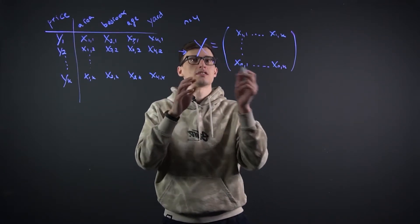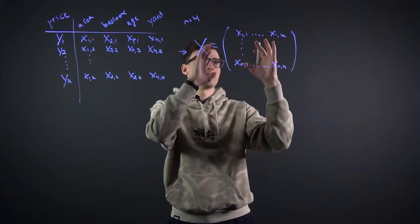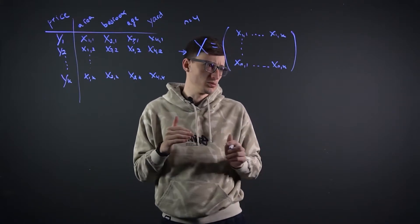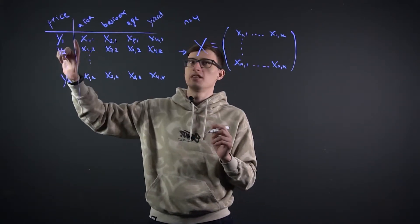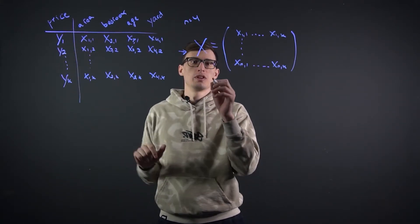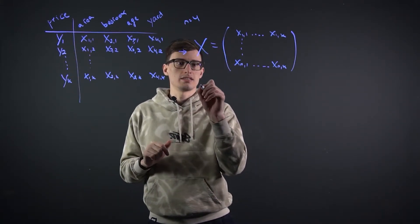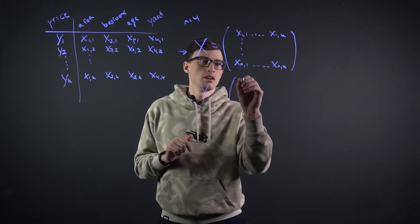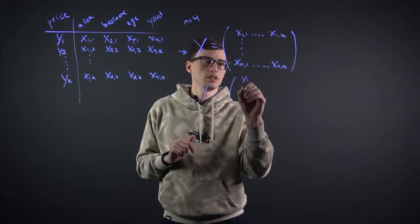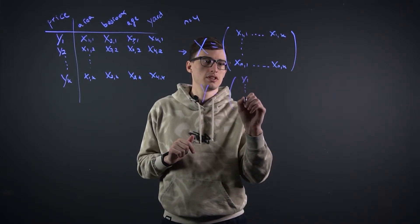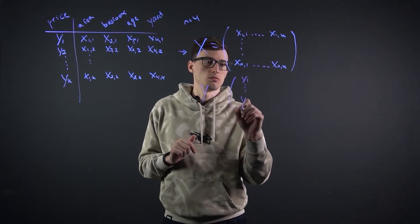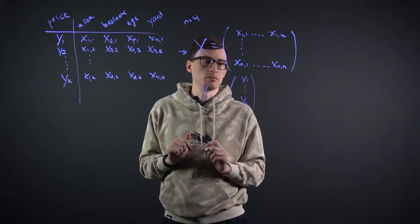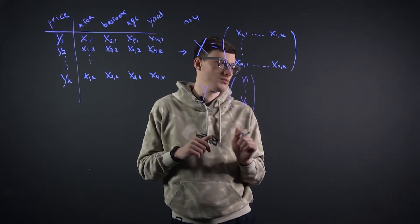So this is matrix X of the independent variables. We call this matrix X. Then the y vector is written as y1 all the way down to yk, because we have k observations.